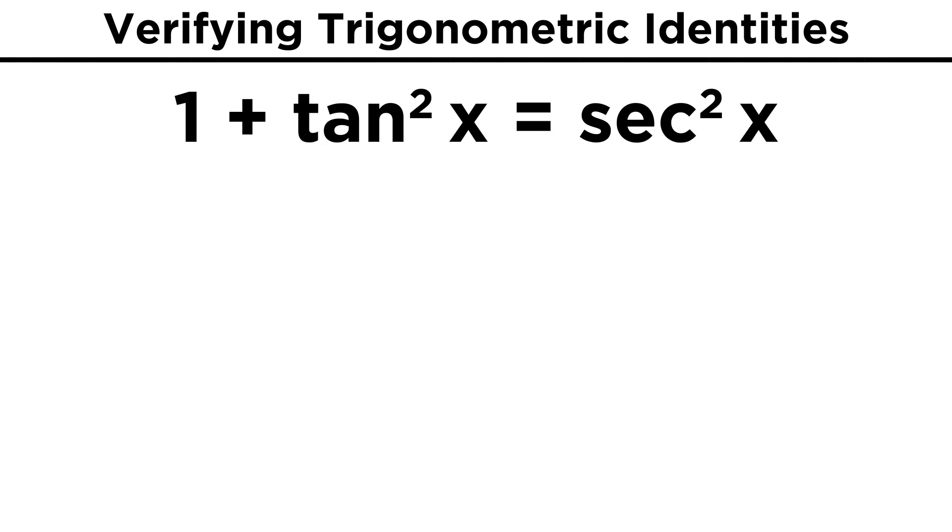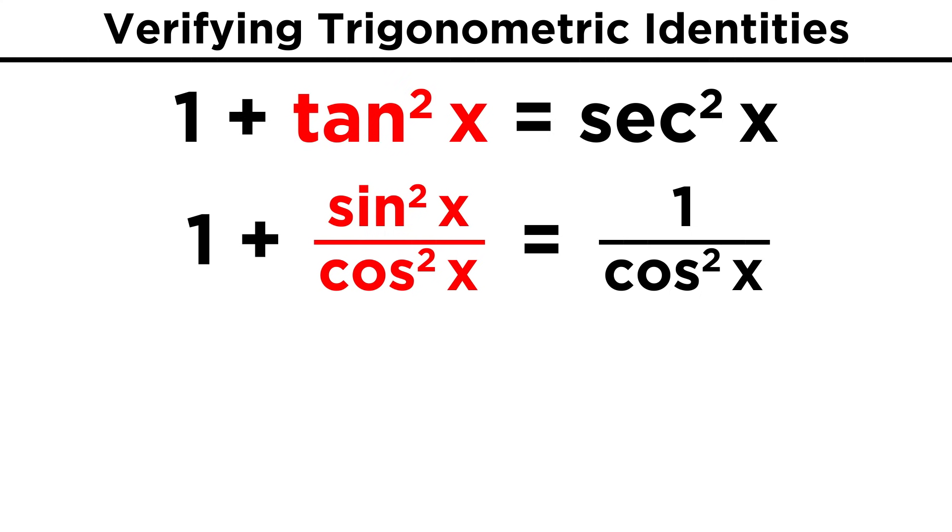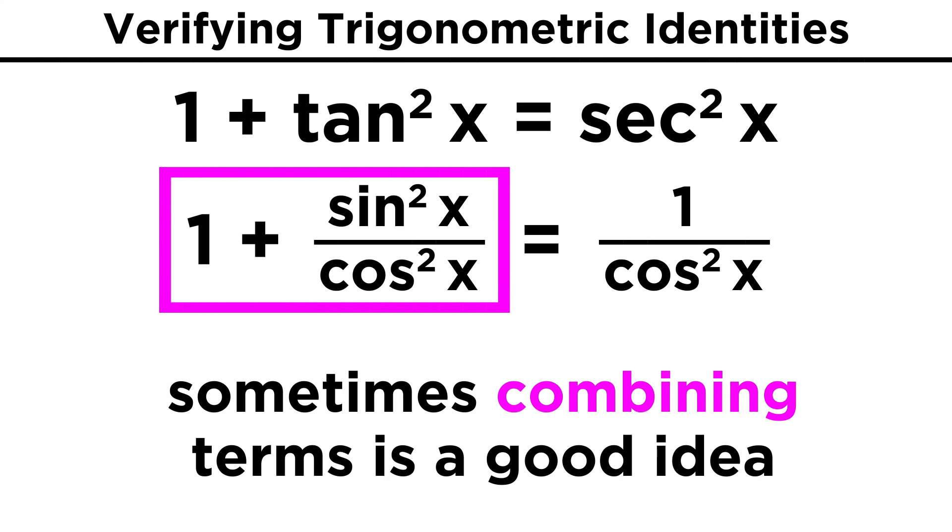Let's try some more examples. How about one plus tangent squared equals secant squared. First things first, let's change tangent squared into sine squared over cosine squared, and secant squared into one over cosine squared. Here's a hint. We have just one term on the right, but two on the left, so what if we try to combine these two terms somehow?